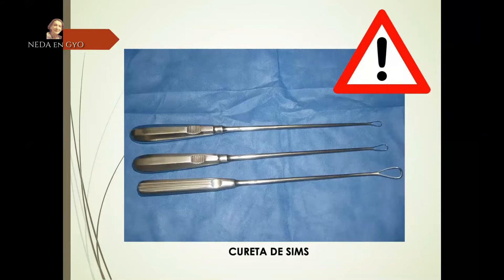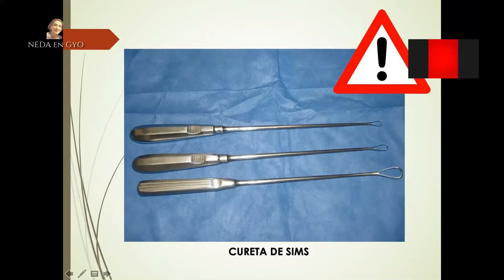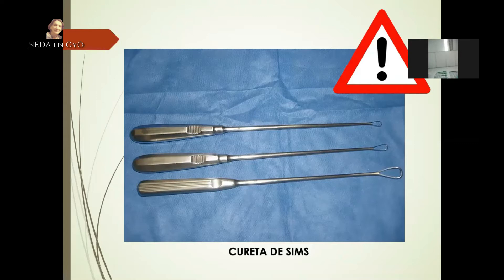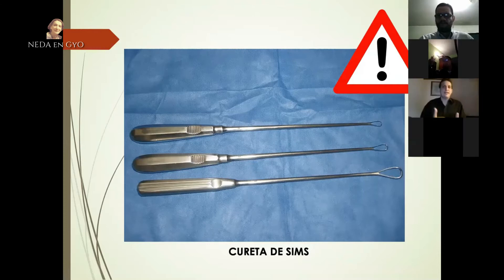La cureta de Sims tiene la punta cortante, y esta es una de las desventajas del legrado uterino con este tipo de cureta, ya que aumenta la incidencia de perforaciones. Sin embargo, en aquellos casos donde la altura uterina supera los 12 centímetros, aún está indicado este tipo de procedimiento, ya que se ha demostrado que el vaciamiento uterino es mejor y más completo.